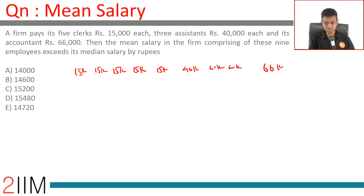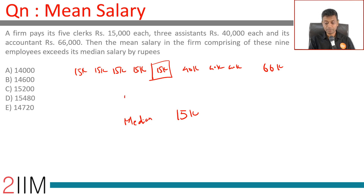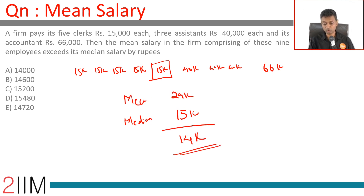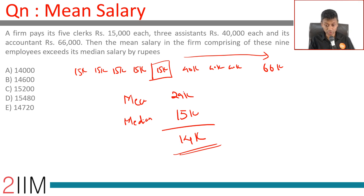There are 9 terms in this list, so the middle term is the median. The median is 15k. The mean is 29k, so the difference is 14k. We don't even need to list all the numbers — since there are 5 terms of 15k, the 5th term is the median, which is 15k. Mean is 29k, difference is 14k.